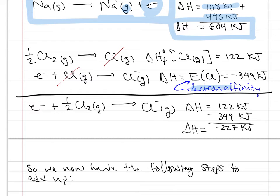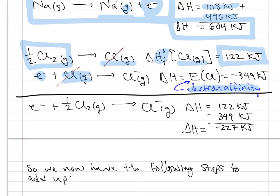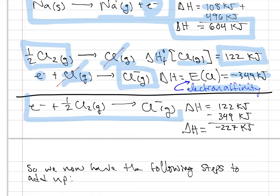A similar process for chlorine involving electron affinity begins with the formation of atomic chlorine from diatomic chlorine. This delta H of formation for chlorine atoms from chlorine in its natural state — diatomic chlorine gas — has an energy of plus 122 kilojoules. The capture of an electron by a chlorine atom is known as electron affinity and gives the gaseous chloride ion, with an energy of minus 349 kilojoules, again found from tabulated data. Adding these two equations allows us to cancel the chlorine atoms, providing the capture of an electron by half a mole of diatomic gaseous chlorine to give one mole of gaseous chloride ions, with a summed enthalpy of minus 227 kilojoules.